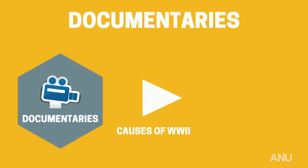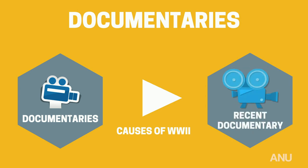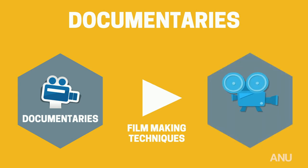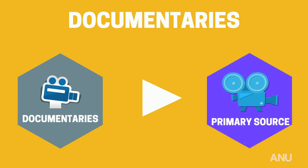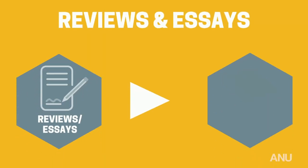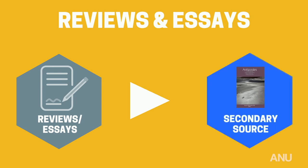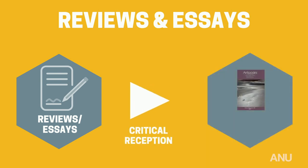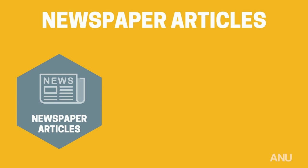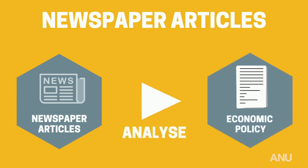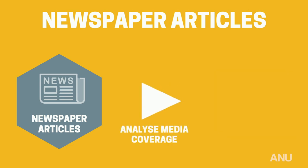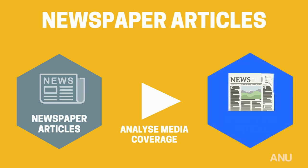Documentaries: when you are researching the causes of World War II, a recent documentary about the war is considered a secondary source. But if you are researching the filmmaking techniques used in historical documentaries, then the documentary itself is a primary source. Reviews and essays: if your paper is about the novels of Anita Heiss, a magazine review of one of her novels is a secondary source, but if your paper is about the critical reception of Anita Heiss' work, then the review is actually a primary source itself. Newspaper articles: if your aim is to analyse a government's economic policy, a newspaper article about a new policy is a secondary source, but if your aim is to analyse media coverage of economic issues, the newspaper article is a primary source.